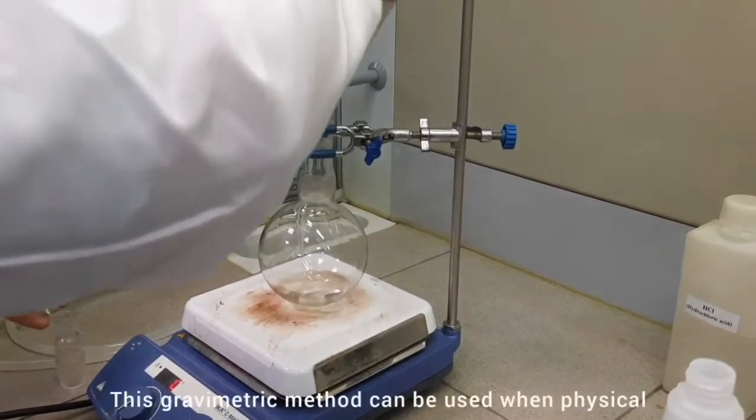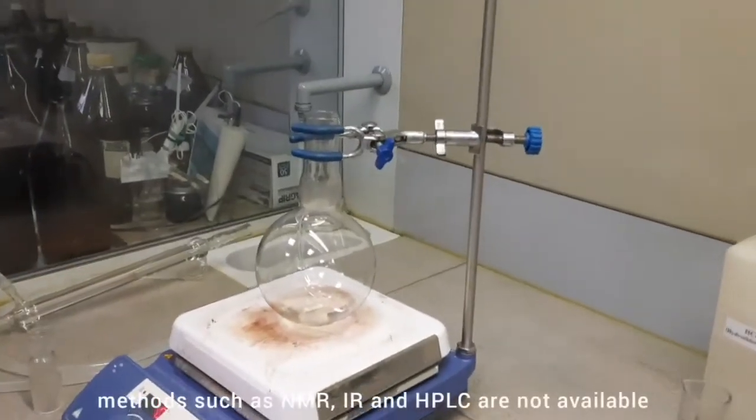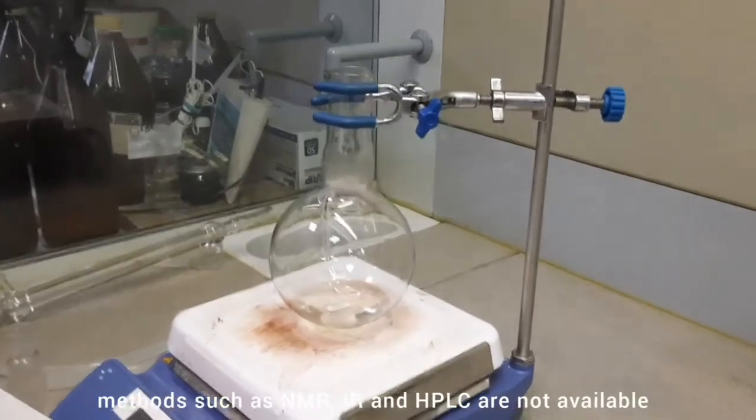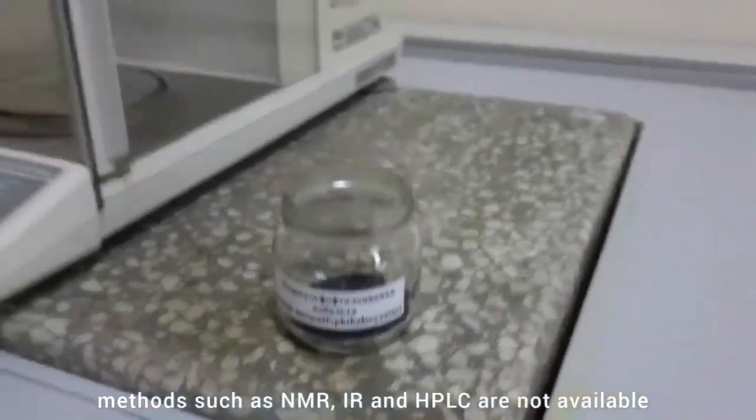This is followed by precipitation of the resulting cobalt sulfate with barium chloride. This gravimetric method can be used when physical methods such as NMR, IR, and HPLC are not available.